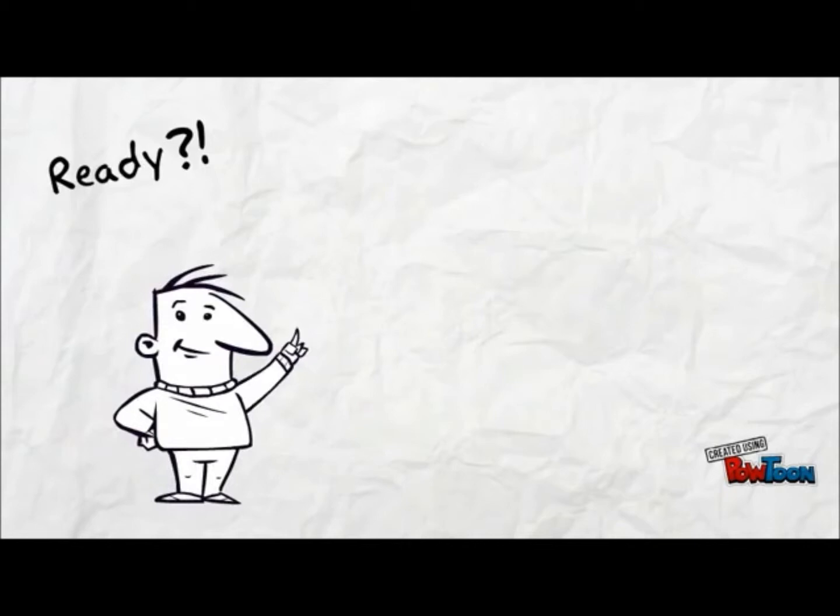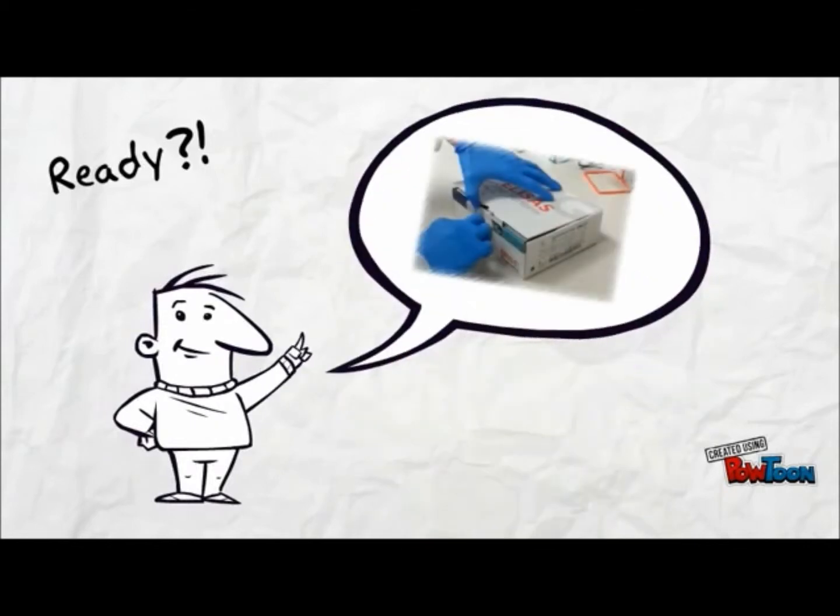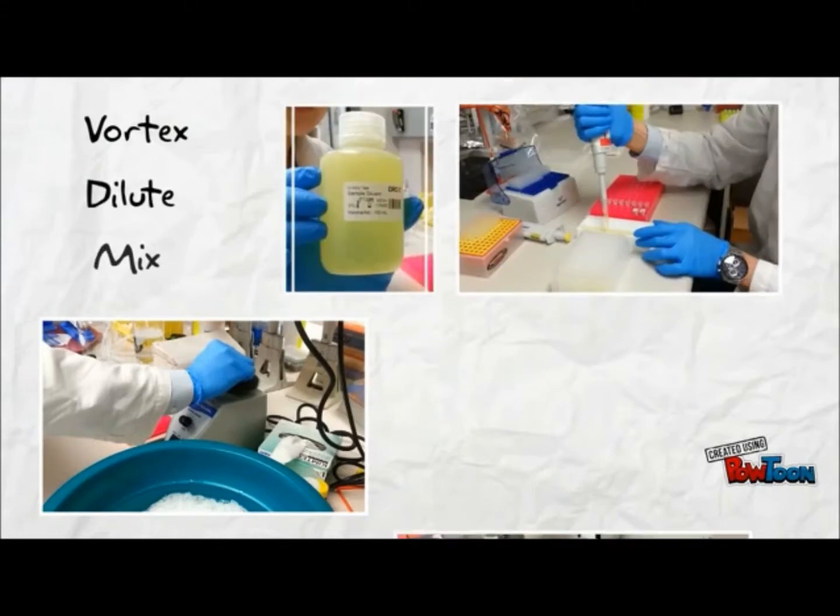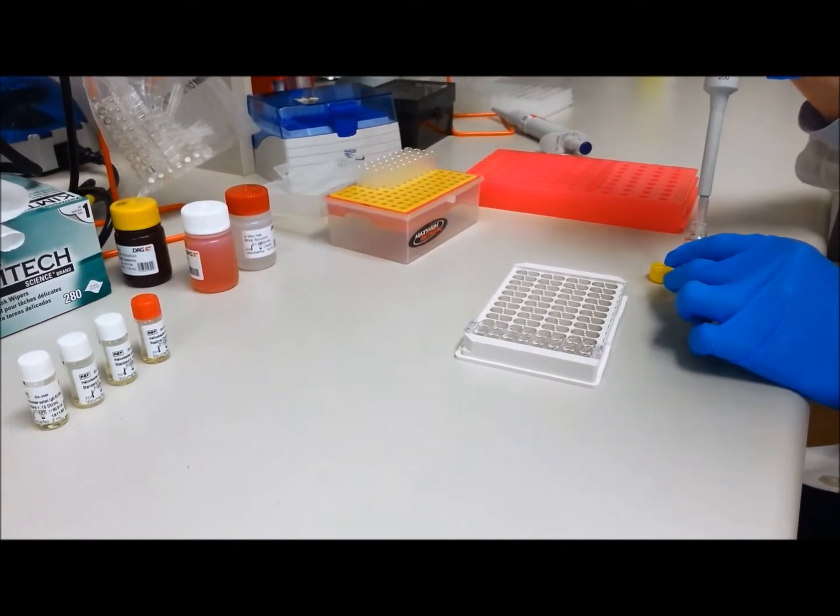Understood and ready? In the demo, we will use DRG's H.Pylori ELISA kit. Vortex the defrozen samples and dilute by a 1 to 10 ratio and mix. Load the negative and positive controls,